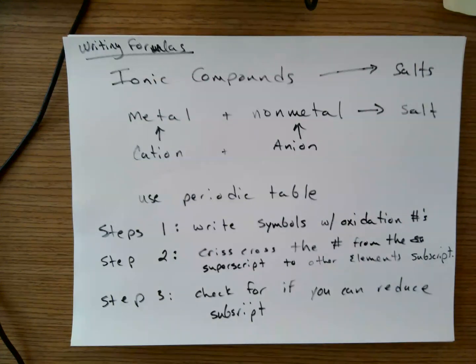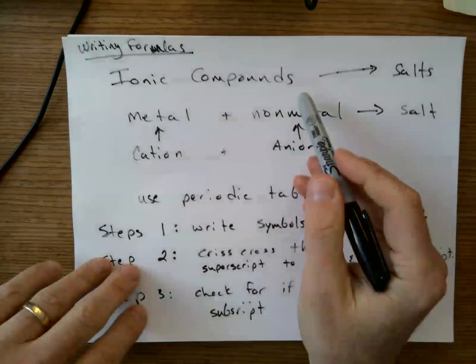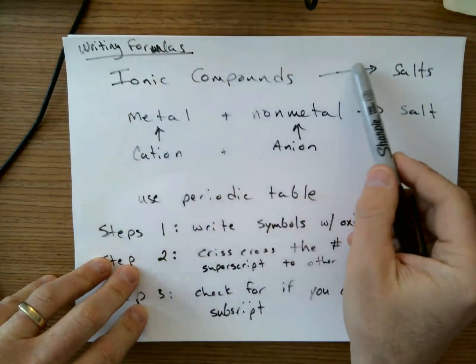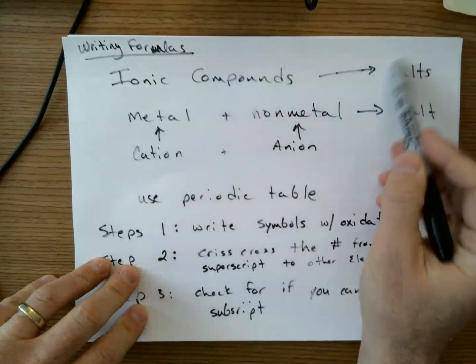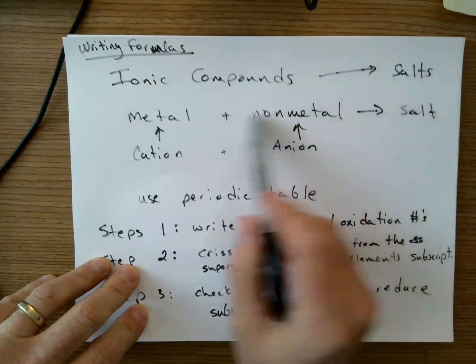Let's talk about writing formulas for ionic binary compounds. So let's just review real fast. An ionic compound, all ionic compounds make salts. So they are salts.